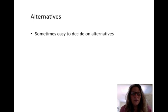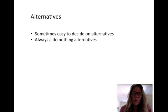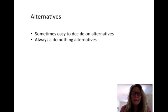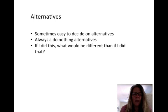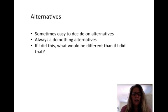When we talk about alternatives, sometimes it's really easy to decide what the alternatives are. Always remember there's a do-nothing alternative. Sometimes the do-nothing alternative means that you have to shut down operations, but we always need to remember it's one of the things we can always do. When we're looking at alternatives, we want to look at the complexity — if I did this alternative, what would be different than if I did that alternative?